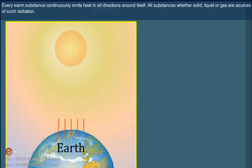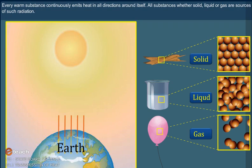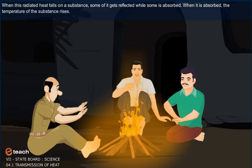Every warm substance continuously emits heat in all directions around itself. All substances, whether solid, liquid or gas, are sources of such radiation. When this radiated heat falls on a substance, some of it gets reflected while some is absorbed. When it is absorbed, the temperature of the substance rises.